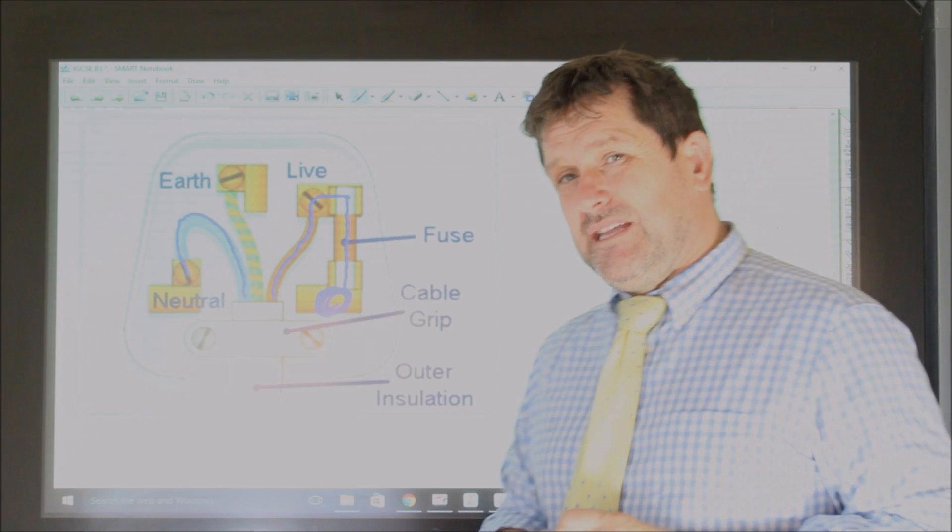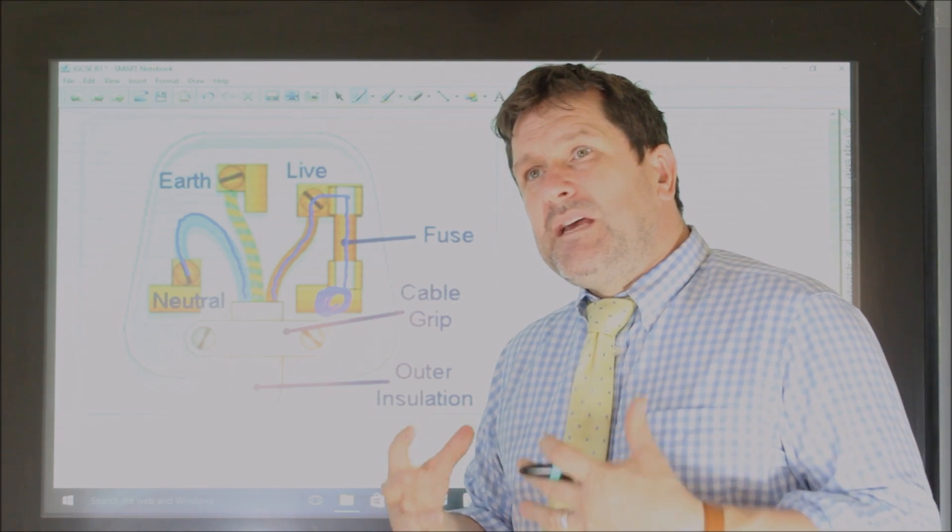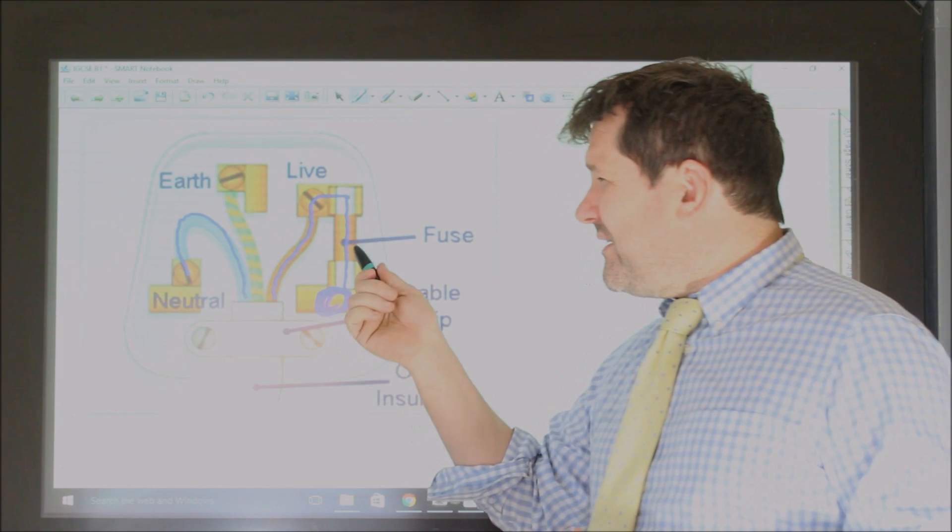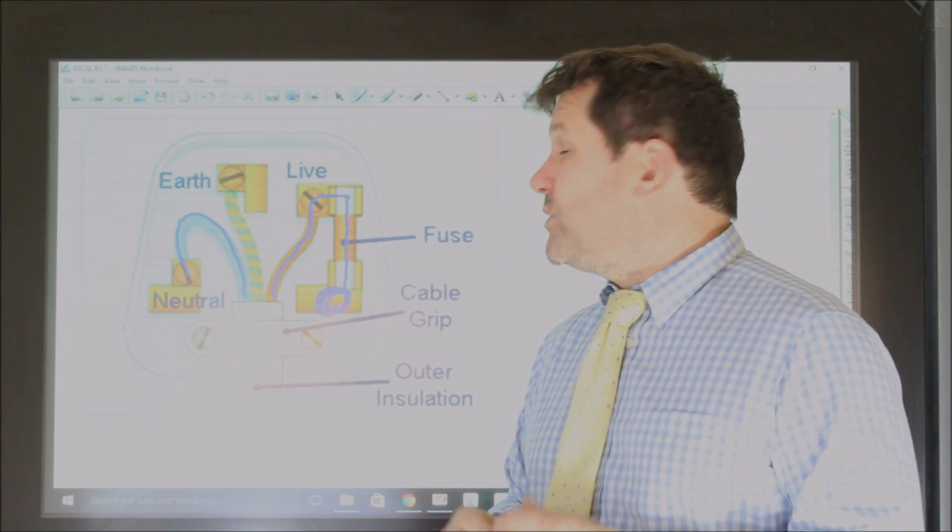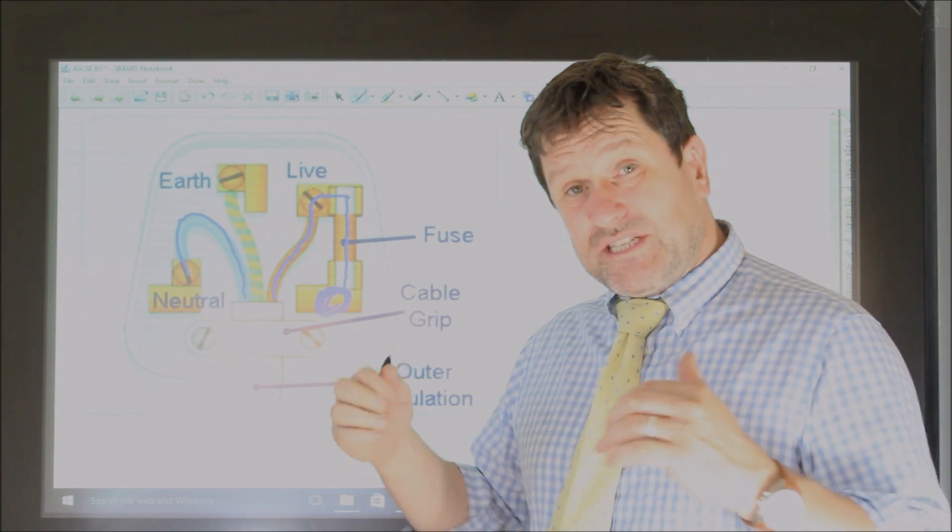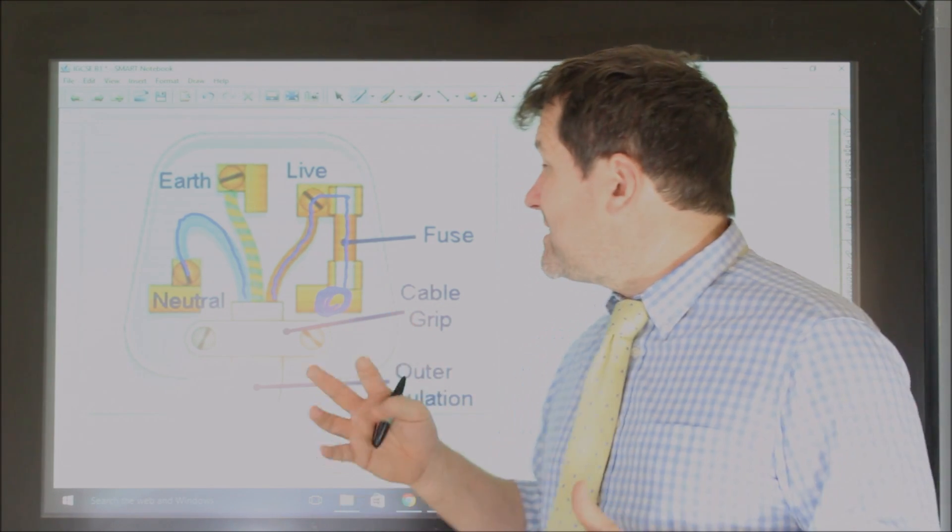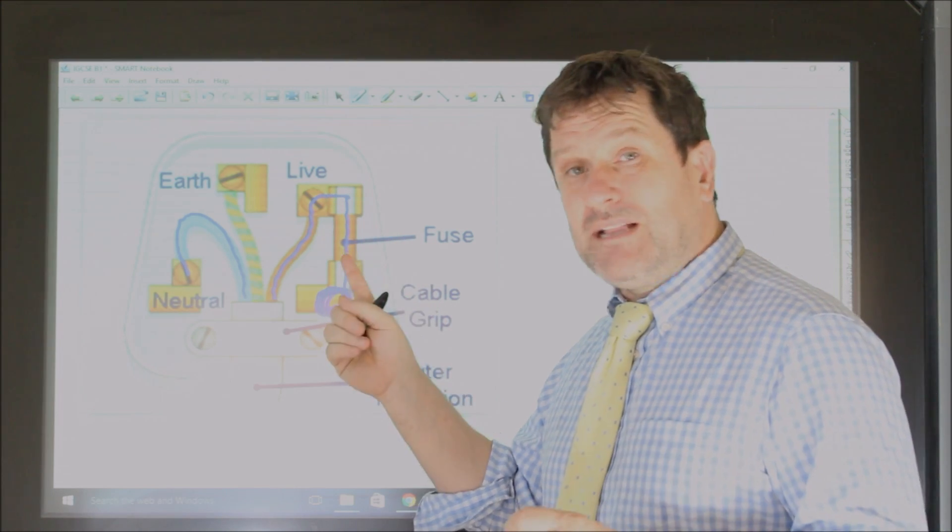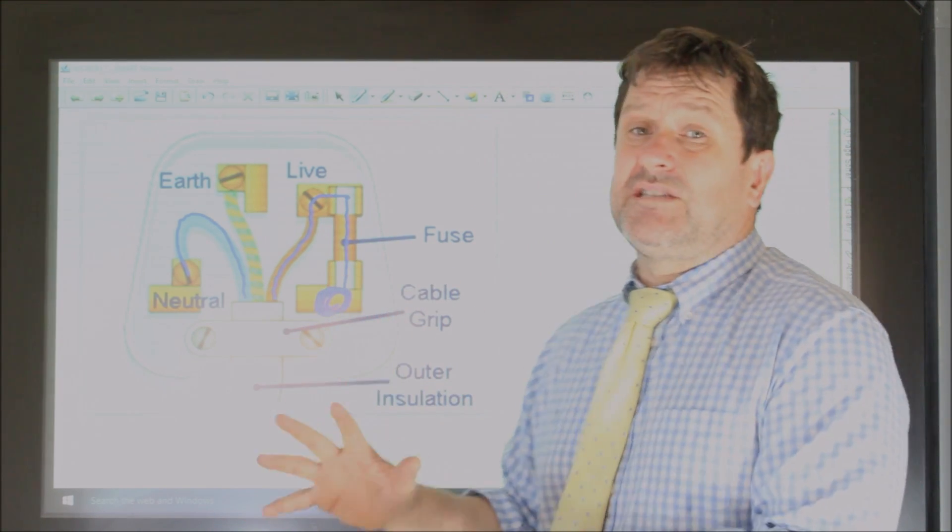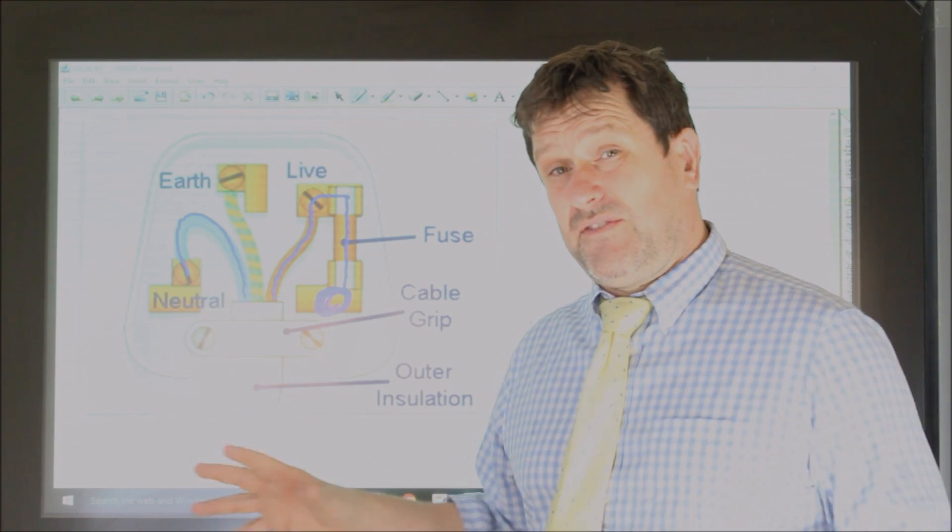Now the fuse is there because if the current exceeds a given value, then the wire, a very thin wire inside the fuse, will melt. So if there's an electrical fault and the current goes higher than that which is deemed safe for that appliance, then the fuse wire will melt, which means the electricity can no longer flow, and then the device is rendered safe because the electricity can't flow anymore.